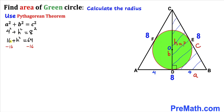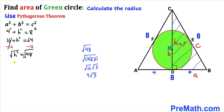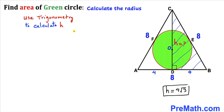Simplifying: subtracting 16 from both sides gives H² = 48. Taking the square root, H = √48, which simplifies to 4√3. So our H value is 4√3.